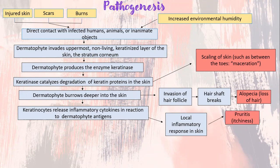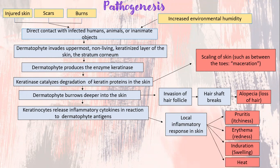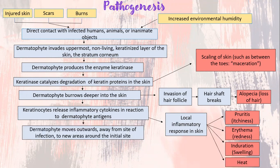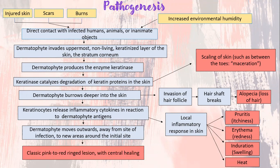A local inflammatory response occurs in the skin, including pruritus or itchiness, erythema or redness, induration or swelling, and heat. Then the dermatophyte moves outwards, away from the site of infection, to new areas around the initial site. This leads to a classic pink to red ring lesion with central healing.